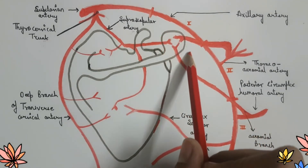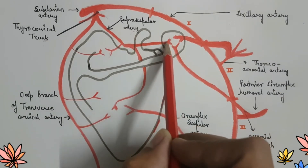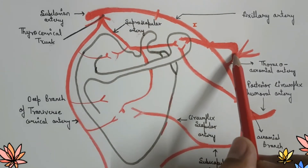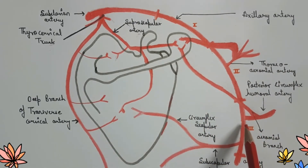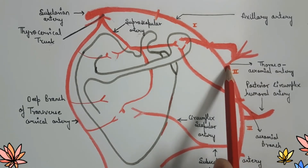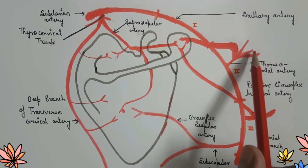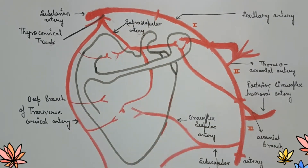Now let's talk about the anastomosis over the acromion process of the scapula. There are three arteries over the body and three arteries over the acromion process, and all three arteries over the acromion process are acromial branches of different arteries. These are: the acromial branch of the suprascapular artery, the acromial branch of the thoracoacromial artery — a large branch of the second part of the axillary artery which gives off four branches: deltoid, pectoral, clavicular, and acromial — and the acromial branch of the posterior circumflex humeral artery, which arises from the third part of the axillary artery.